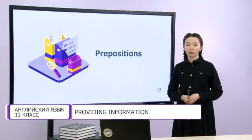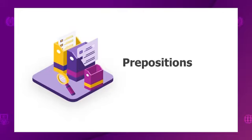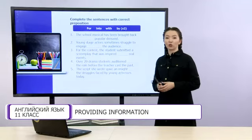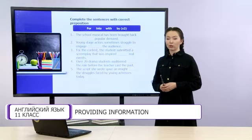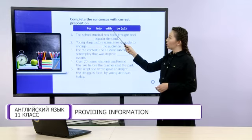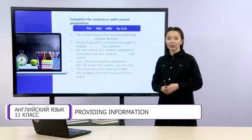Now it's time for some grammar. Today we are going to talk about prepositions. You already know that some words require a particular preposition after them. Now let's do an exercise to check it. On the screen you can see five sentences that you need to complete with the correct preposition from the box: for, into, with or by. You can use by twice. Now you can start completing the sentences.